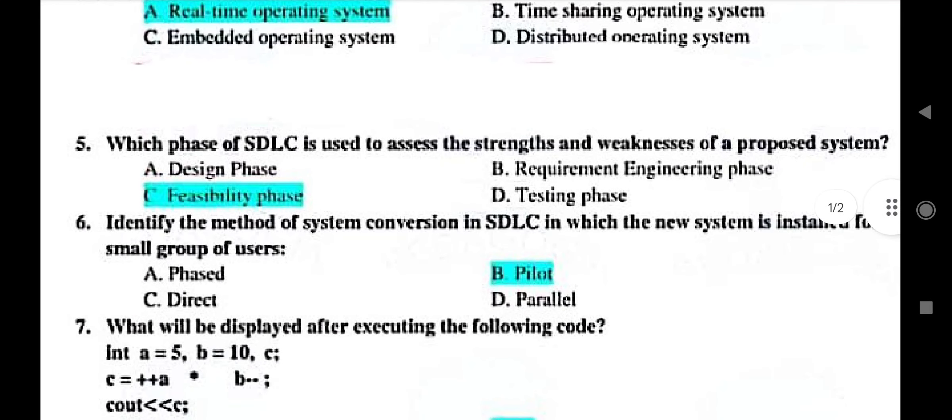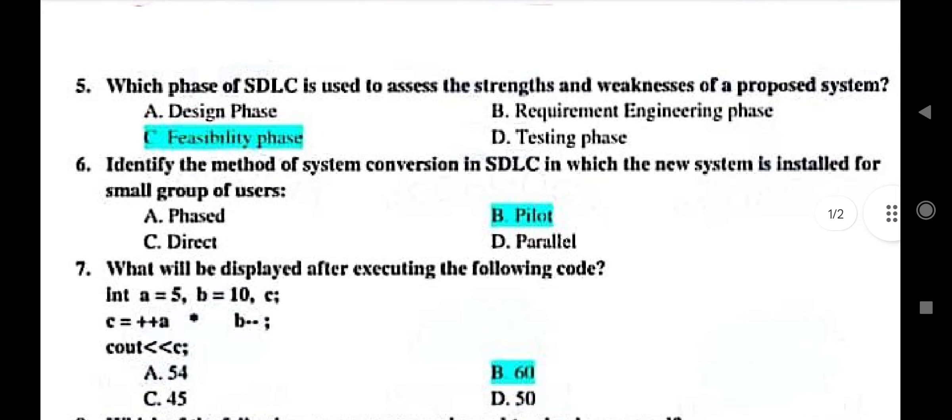Then which phase of SDLC is used to assess the strengths and weaknesses of a proposed system. So that is feasibility phase. Then identify the method of system conversion in SDLC in which the new system is installed for small group of users. So that is option B is the correct option pilot.